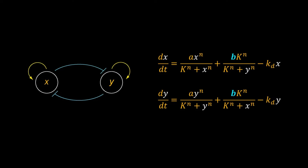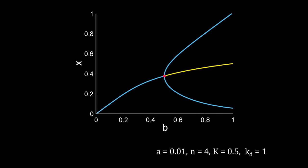We will use b as the control parameter for the bifurcation analysis. Here is the bifurcation plot for this system. The blue lines are for the stable steady states and the yellow one is for unstable. This is a supercritical pitchfork bifurcation you have seen earlier. The bifurcation point is at b equal to 0.498. Our ODEs are symmetric so the bifurcation diagram of y is similar to x.